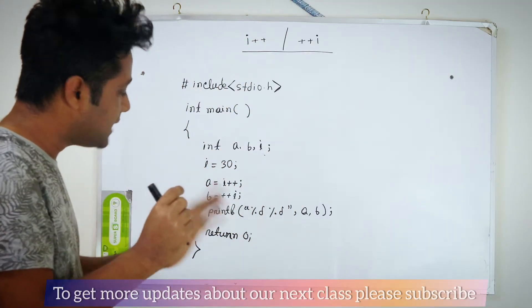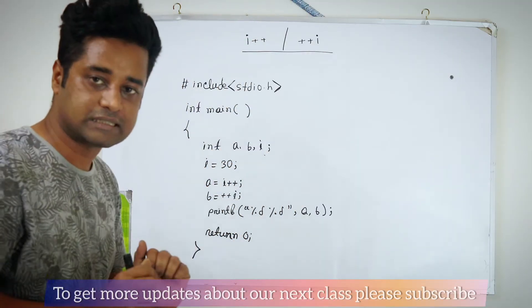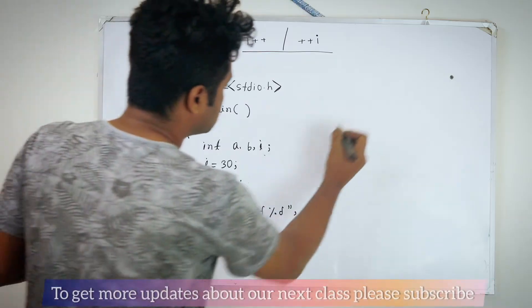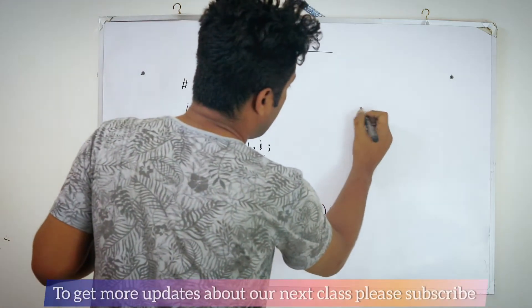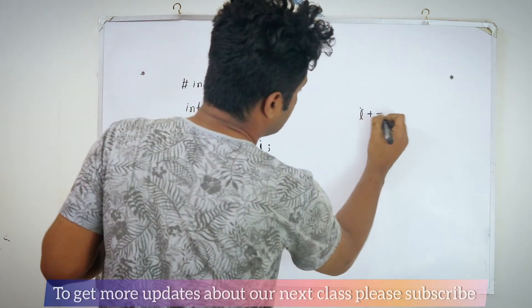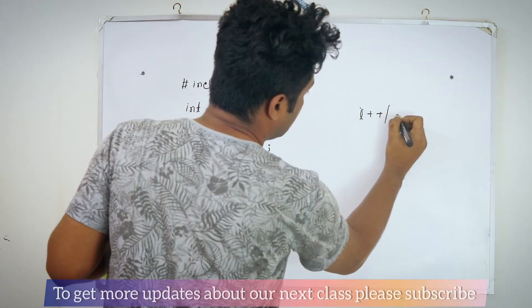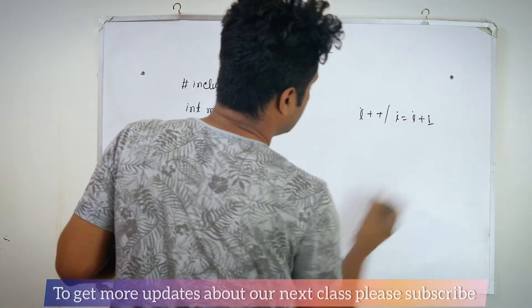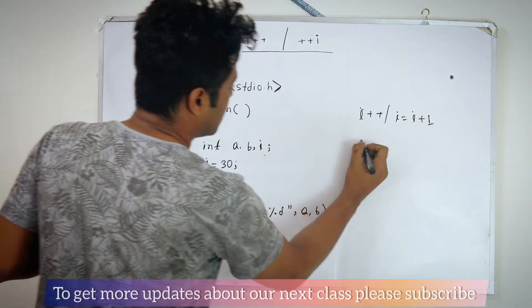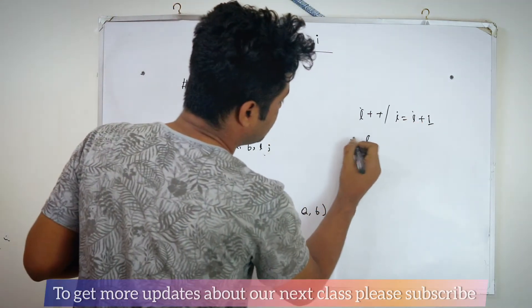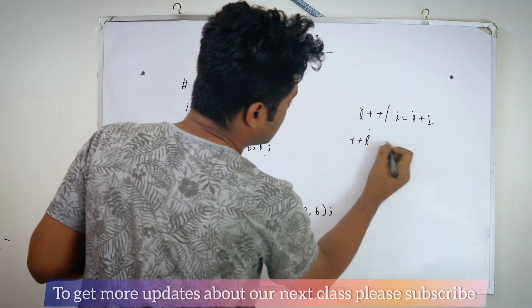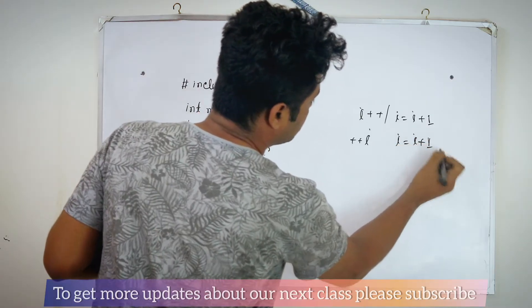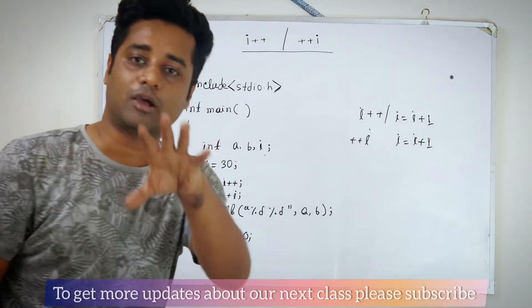We have b equal to ++i. i++ means i equal to i plus one. We have a plus i, plus i equal to i plus one.